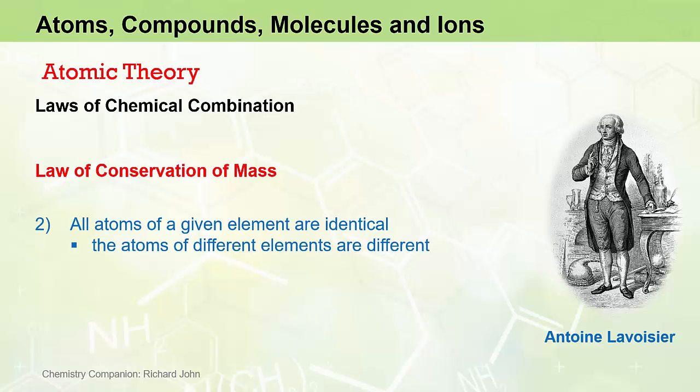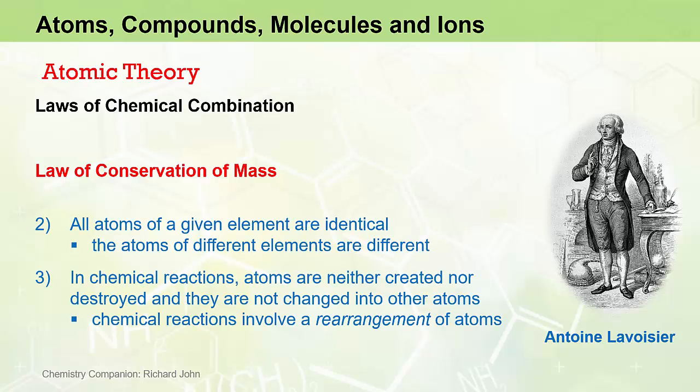If we consider the second and third of Dalton's postulates, we see that atoms of different elements are different and have different characteristic properties, including having their own unique mass, and that chemical reactions simply involve a rearrangement of atoms, not the creation or destruction of atoms. It therefore follows that the mass of reactants before a chemical reaction must be equivalent to the mass of the products that result from that chemical reaction, given that the chemical reaction is simply a rearrangement of atoms.